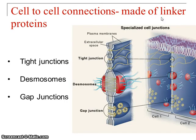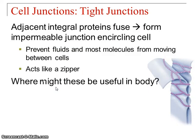Linker proteins can make different types of cell junctions. We'll look at tight junctions, desmosomes, and gap junctions. Tight junctions are almost as if two cells have been zippered together — there are lots of points of contact where nothing can cross between the two cells. Where might these be useful? Anywhere you want to keep things separate.